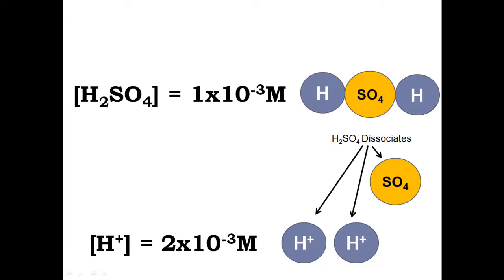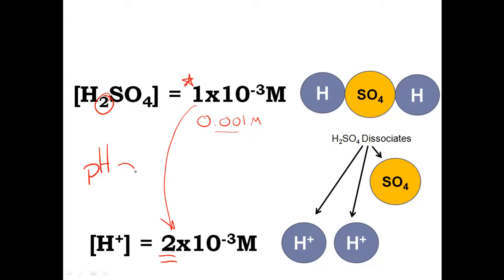You can also have polyprotic acids — an acid that donates multiple H+ ions. For example, H2SO4 will donate two H+ ions when it dissociates. If the molarity of H2SO4 is 1×10⁻³ molar (0.001 moles per liter), when it dissociates the H+ concentration doubles from 1×10⁻³ to 2×10⁻³. One H2SO4 produces two H+ ions, so I'm doubling the ion concentration. Remember, pH is about the concentration of the H+ ion — not the concentration of H2SO4 itself.